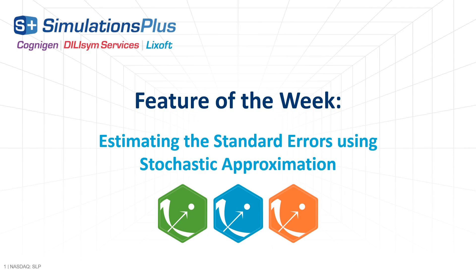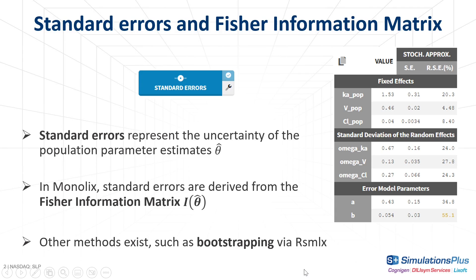Welcome to this new Feature of the Week video. Today I will explain how standard errors are calculated in Monolix using stochastic approximation. Standard errors represent the uncertainty of the estimated population parameters. They can, for instance, be used to calculate confidence intervals or detect model overparameterization.